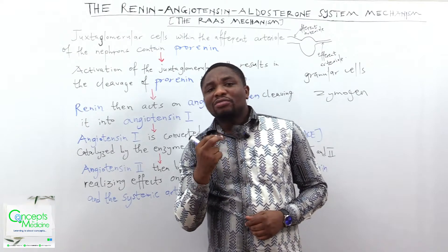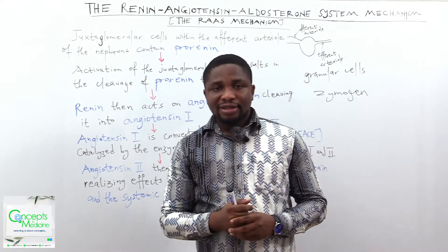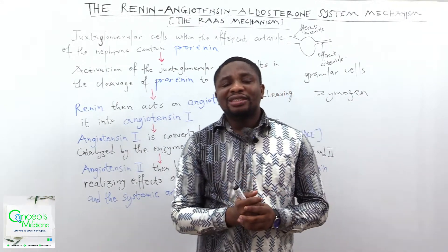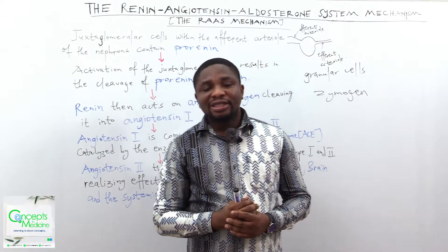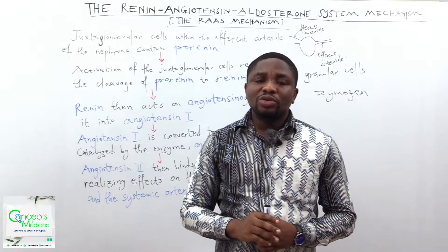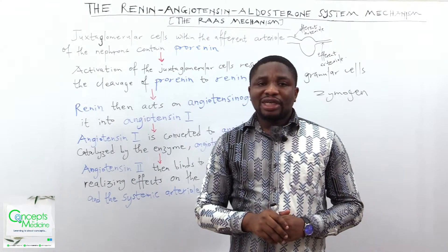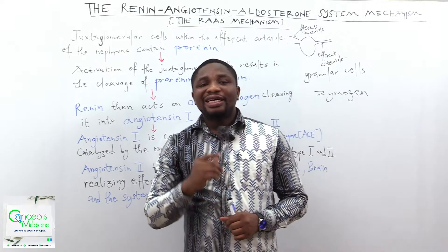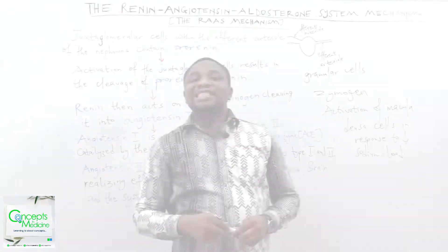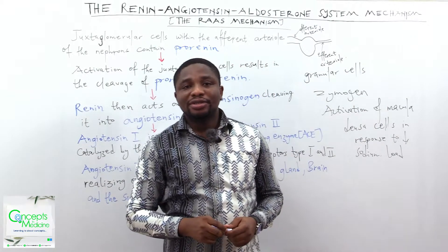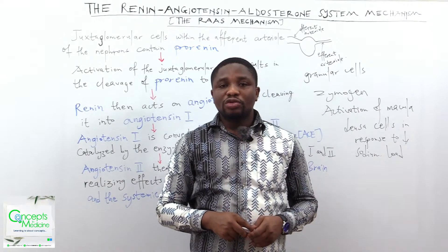Activation of the juxtaglomerular cells causes the cleavage of pro-renin to renin. There are three factors responsible for the activation of the juxtaglomerular cells, also referred to as the granular cells. The first one is low blood pressure. The second one is beta activation. And the third one is activation of the macula densa cells in response to decreased sodium load in the distal convoluted tubule.